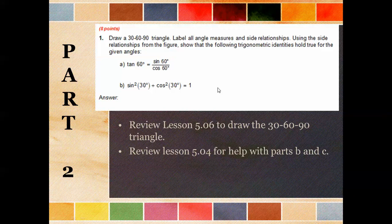Hello, in this video we are going to talk about the Unit 5 Part 2 test. On this Part 2, the first thing I'm going to do — this is the exact question that's on your Part 2 test, so we're not going to actually solve it out. I'm just going to point you in the direction to go. For this first part, it asks you to draw the 30-60-90 triangle, label the angle measures, and use the side relationships to show that these trig identities are true.